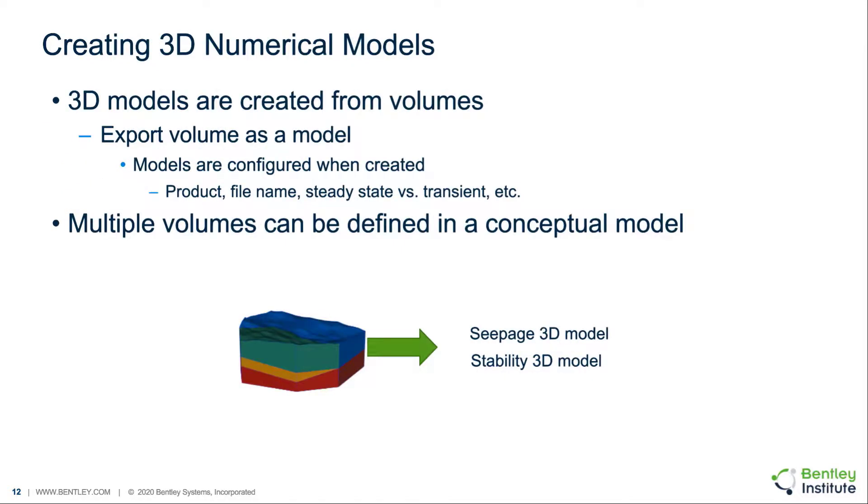3D numerical models can be created from volume objects. Once this collection of surfaces and layers has been assembled into a model volume, then the model volume can be exported to a seepage or stability 3D model. Model configuration options are selected during the exporting process. It's also worth noting that multiple volumes can be defined in a single conceptual model, in the scenario where there may be multiple geometries or geometry variations to be created in a numerical model.